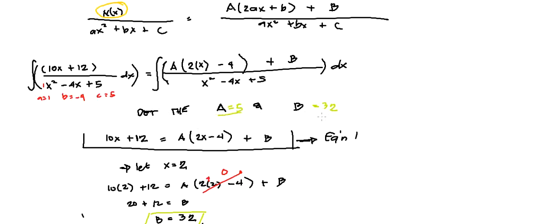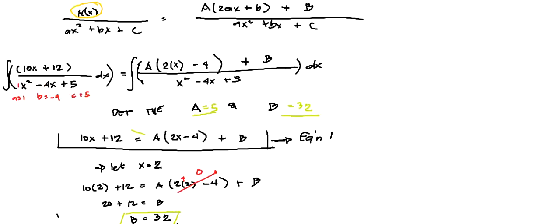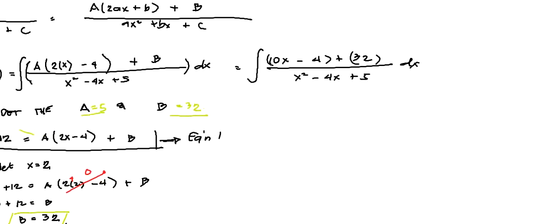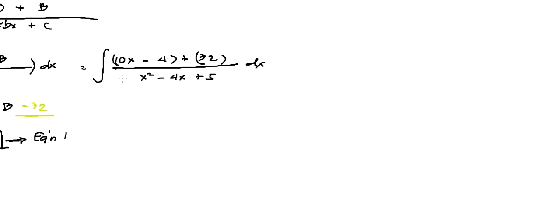So after determining the values of A and B, we can now go back to our equation. So let's now use our values of A and B. So we have 2 times 5, we have 10x minus 4 plus our B is 32. Then all over x squared minus 4x plus 5 dx. So from here, you can now solve or evaluate this integrand.